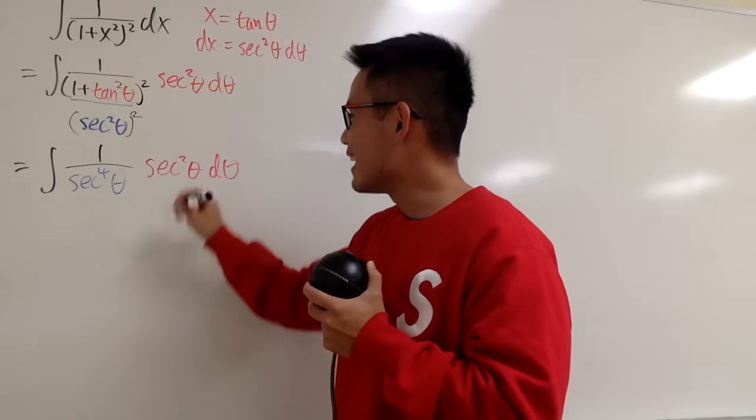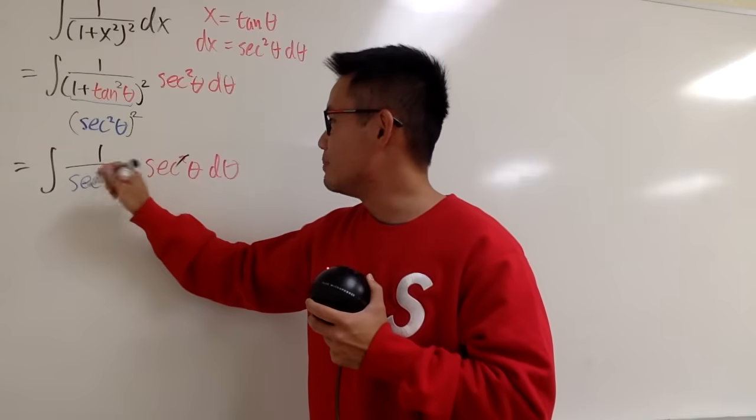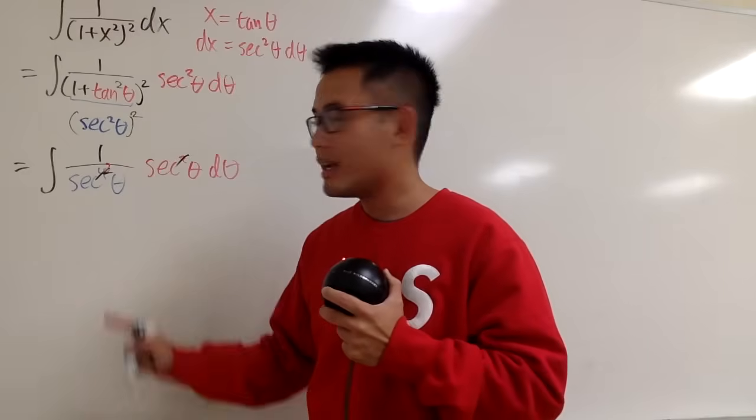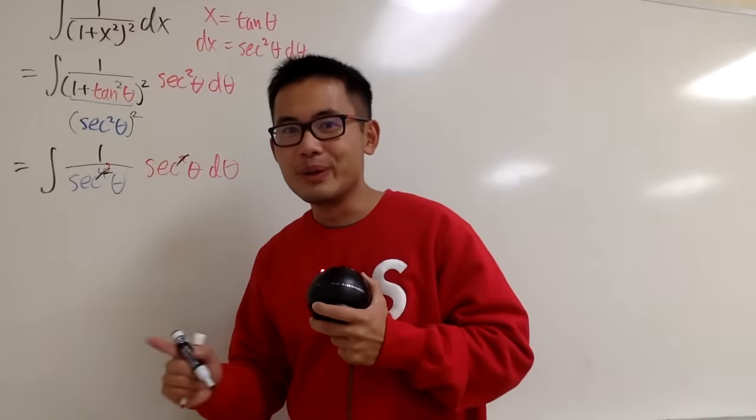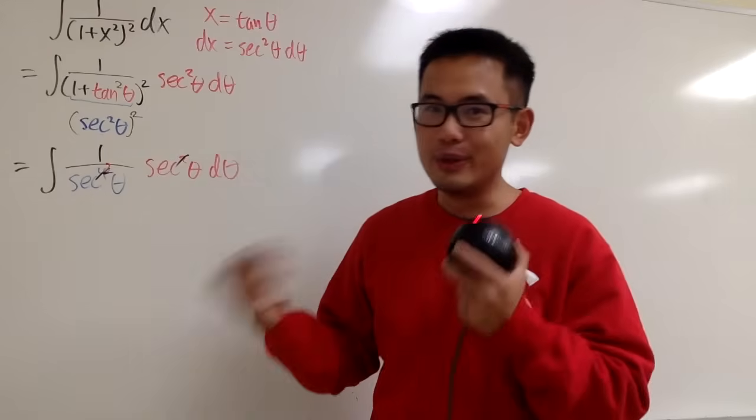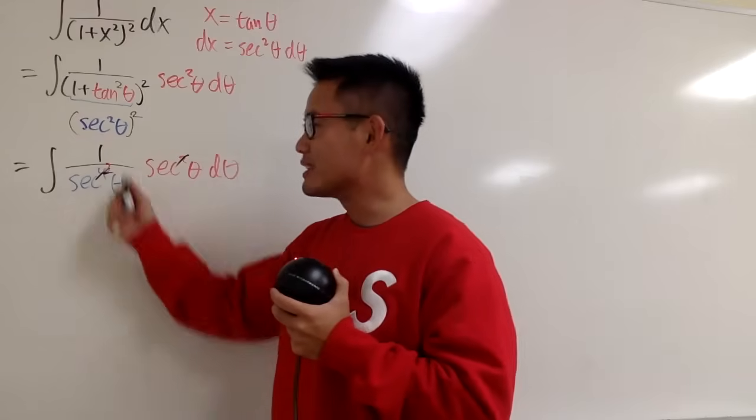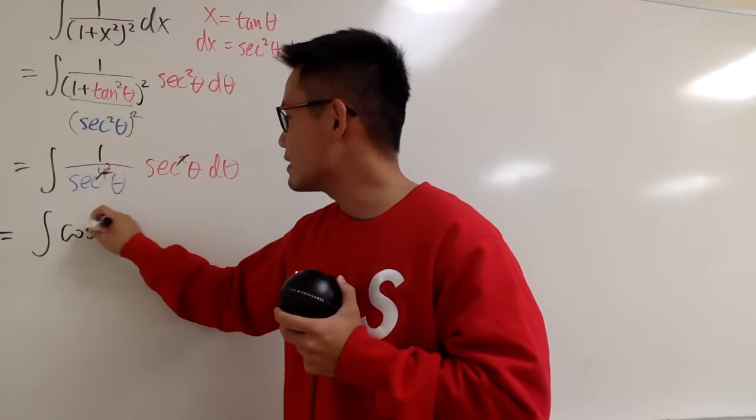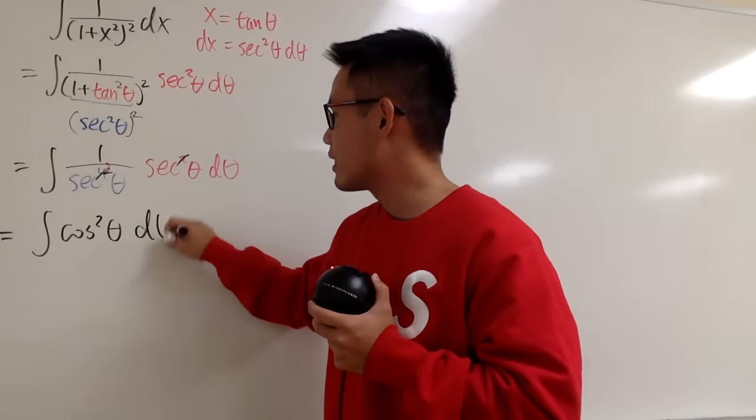And now we can cancel things out, cancel two of them and this becomes two more on the bottom. Here is the deal. We know secant is equal to 1 over cosine. When we have 1 over secant, that's just regular cosine and we have secant squared on the bottom. So this is the same thing, the integral of cosine squared theta d theta.